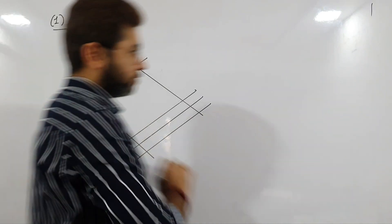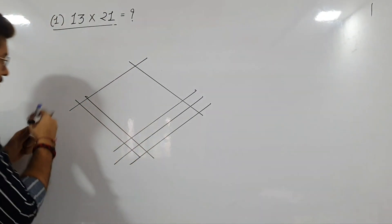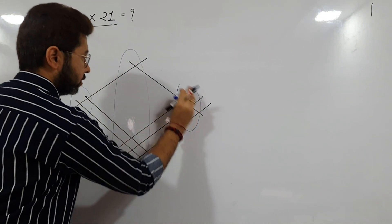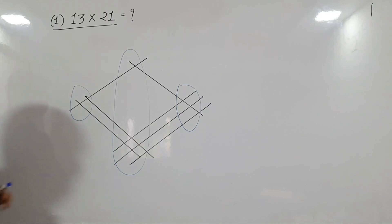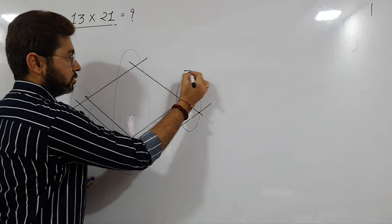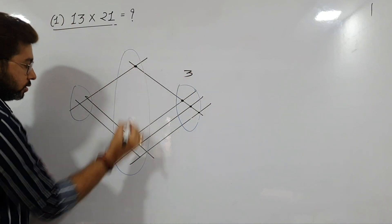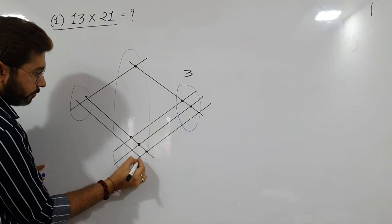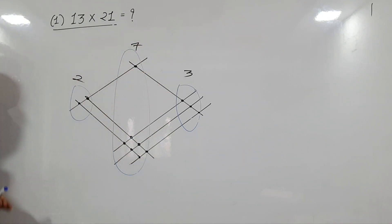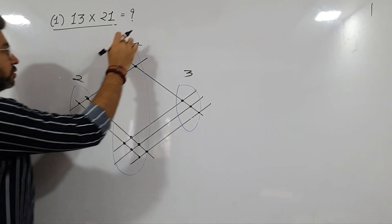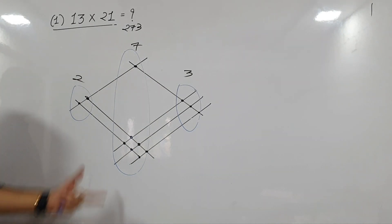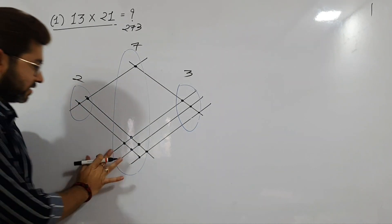This is zone number one, zone number two, and zone number three. Just count the number of crossings. Starting here: one, two, three — so this zone gives 3. Zone two: one, two, three, four, five, six, seven — that's 7. And here it is 2. So the answer is 2, 7, 3 — you can verify with a calculator.